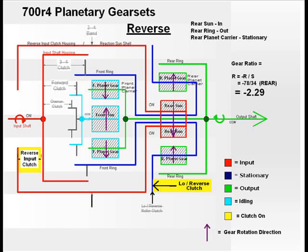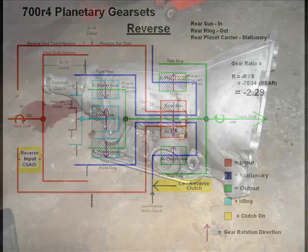In accordance with the classic gear formula, sun in, ring out, and carrier stationary is reverse. If we apply this formula to the rear gear set teeth, 34 sun teeth and 78 ring teeth, we get a ratio of 2.29.